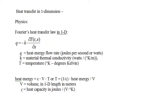Fourier's heat transfer law states that q, the heat energy flow rate, equals minus k — where k is the thermal conductivity constant of the material — times the spatial derivative of temperature, that is, the partial derivative of temperature with respect to x. The units of heat energy are joules. Q in one dimension is the heat flow rate, measured in joules per second, or watts.